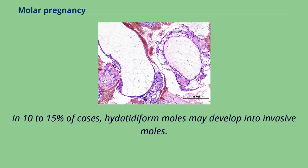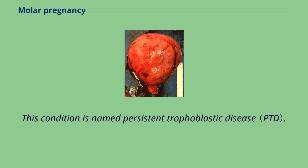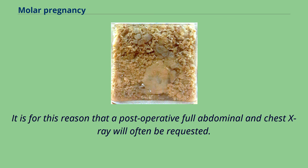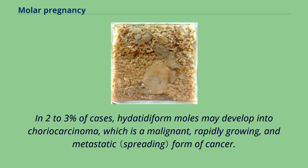In 10-15% of cases, hydatidiform moles may develop into invasive moles. This condition is named persistent trophoblastic disease. The moles may intrude so far into the uterine wall that hemorrhage or other complications develop. It is for this reason that a post-operative full abdominal and chest x-ray will often be requested. In 2-3% of cases, hydatidiform moles may develop into choriocarcinoma, which is a malignant, rapidly growing, and metastatic form of cancer.